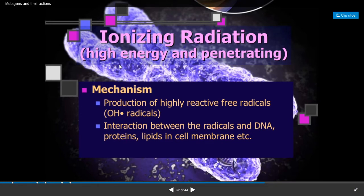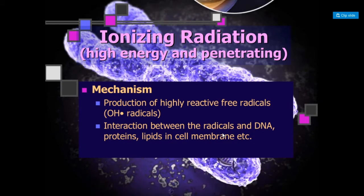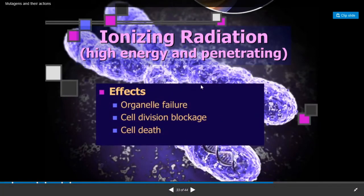Ionizing radiations have high energy and penetrating power, and are responsible for the formation of highly reactive free radicals. These free radicals interact with DNA as well as proteins and lipids in the cell membrane. Ionizing radiations cause effects that result in failure of organelles, blockage of cell division, and death of cells.